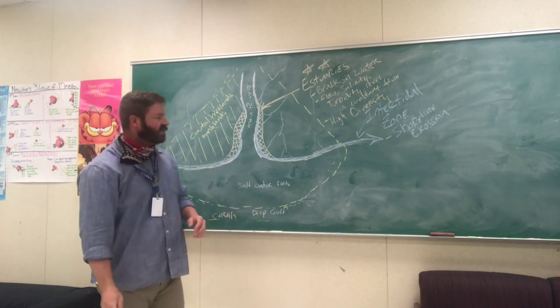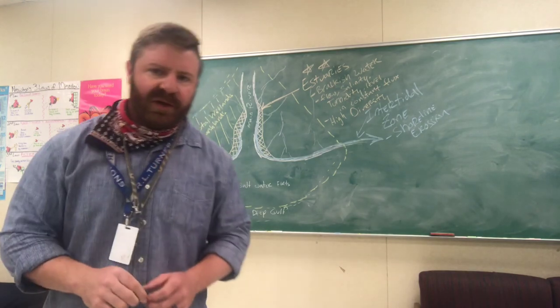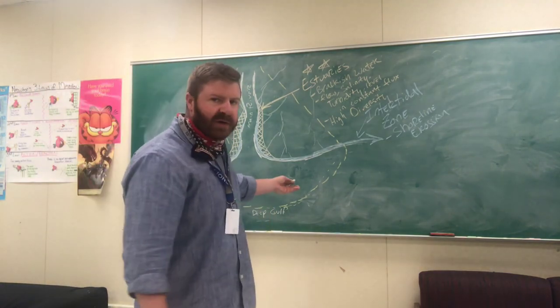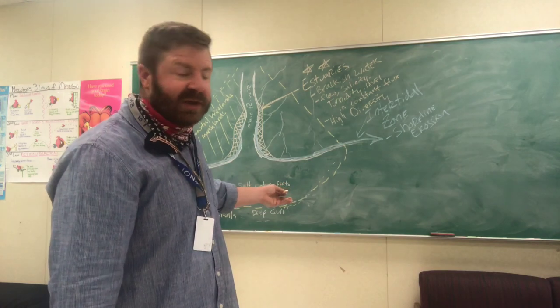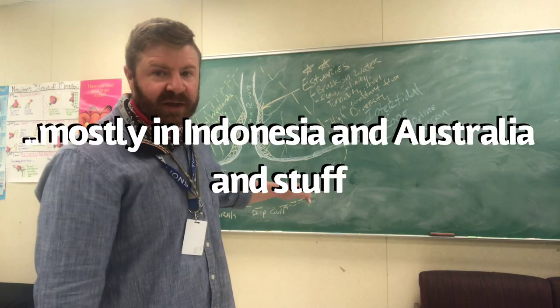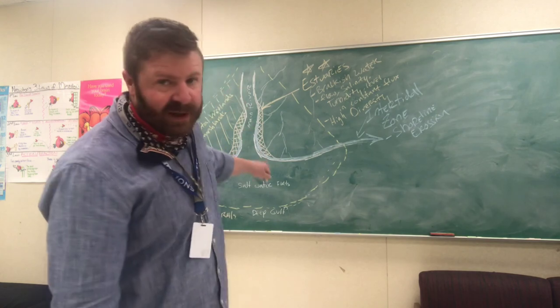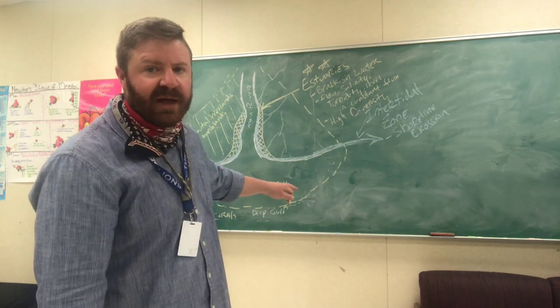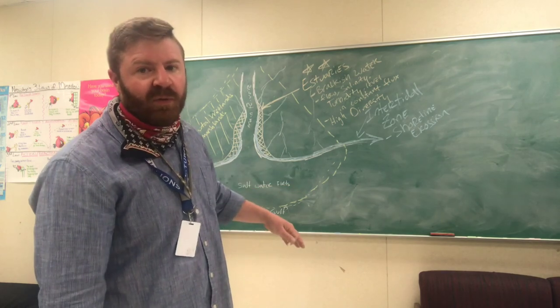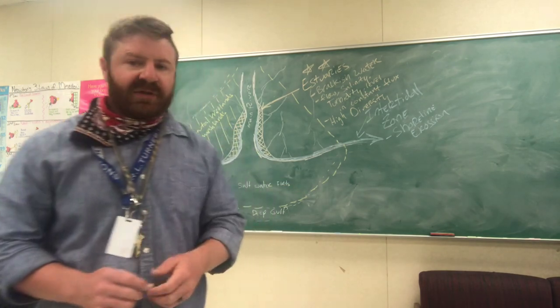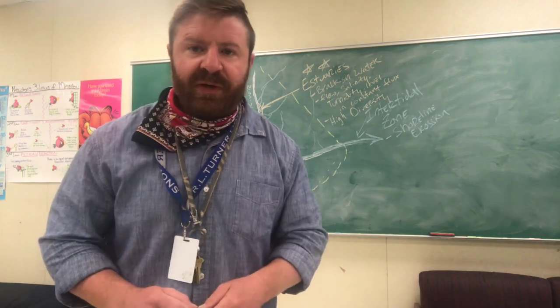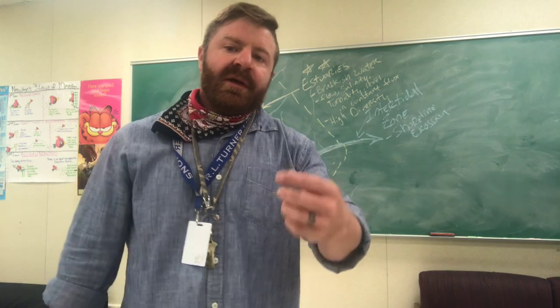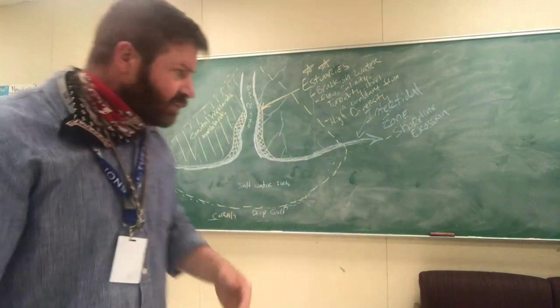So out here in this deeper water is where we're typically going to get corals. Now we'll talk about coral reefs in probably another video, because that's a very specialized habitat. Sometimes you'll get corals growing all the way up close to the beach, but usually, particularly at the mouth of a huge river, the corals can't exist right there in that zone of deposition. They have to be out in deeper water. And if you'll do a little bit of research, you'll know that we have some deep water coral reefs in the Gulf of Mexico. They can't be right at Louisiana. They can't be right at New Orleans, but they're out in deeper water. And that's why.